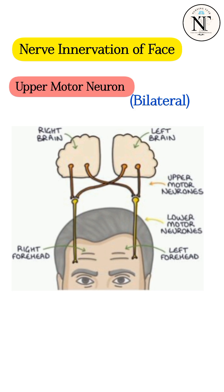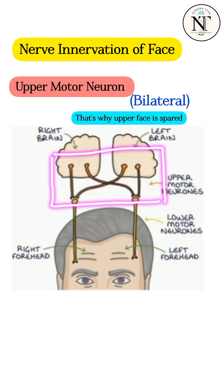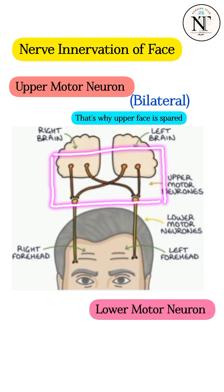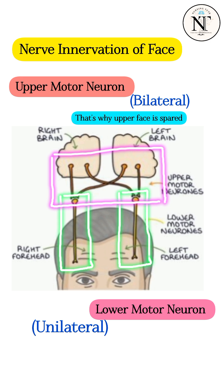The upper motor neuron is bilaterally innervated, meaning it gets input from both sides of the brain. On the other hand, the lower motor neuron is unilaterally innervated, meaning it only gets input from one side of the brain. So now you understand the innervation of the face.